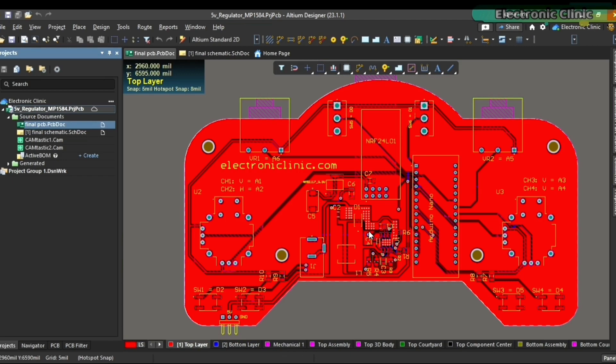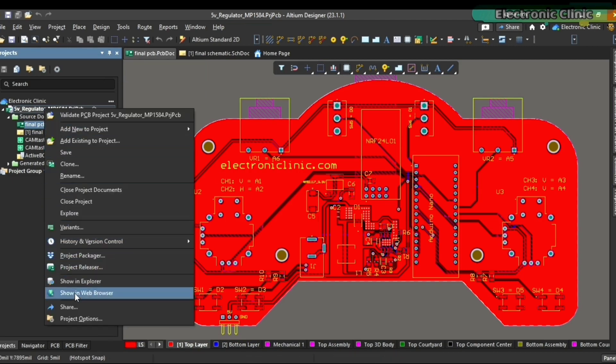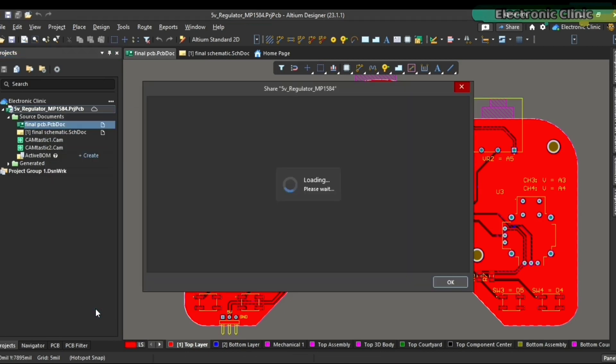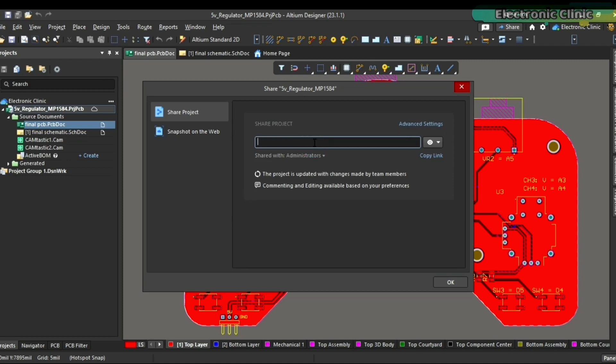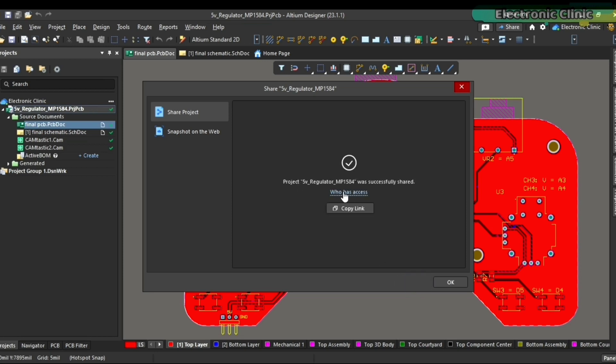Let me show you how to share your project. Simply right click on the project name and select share. Write the user's email, select read or write permissions from the drop down menu on the right, and click on the share button. It's just that simple.